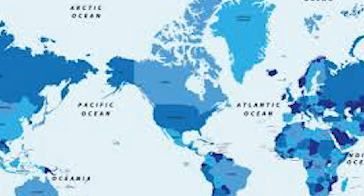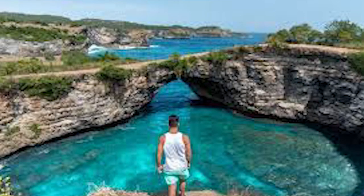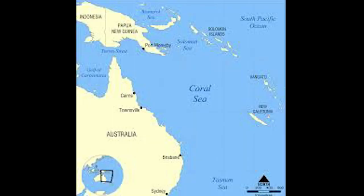Ocean. A large body of water that is part of an expansion of a sea. A lagoon. A shallow body of water that is separated from the larger body of water or by islands. A sea. An expansion of salt water that covers most of the earth's surface.